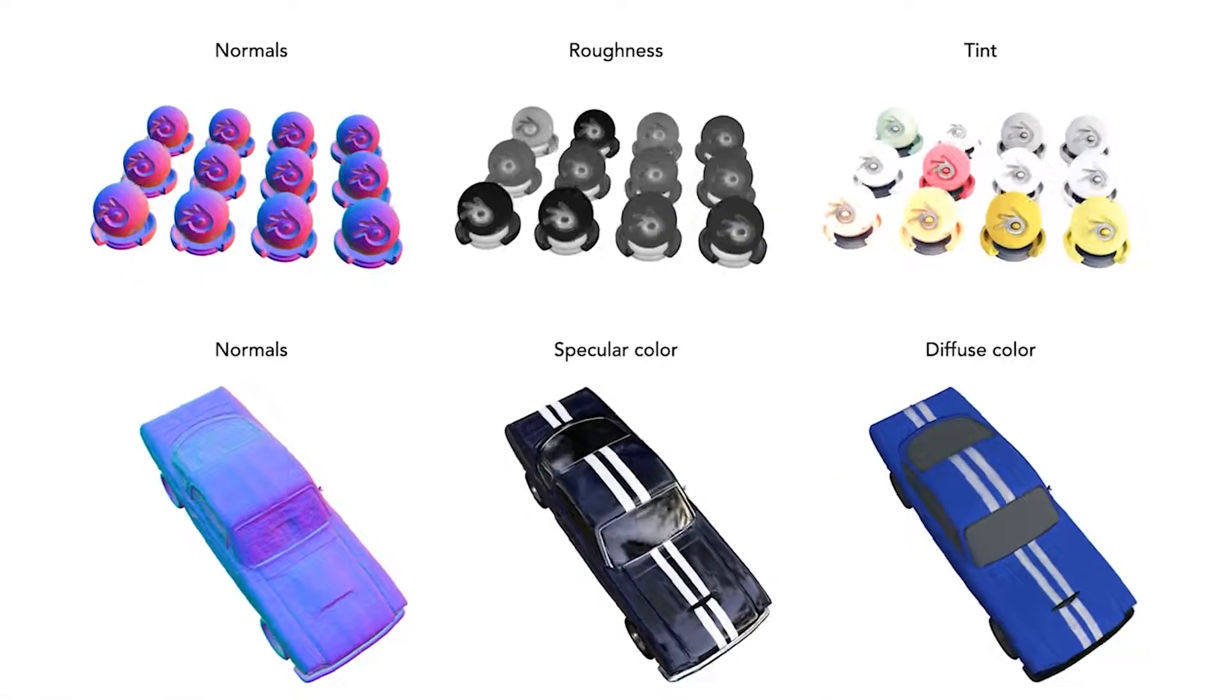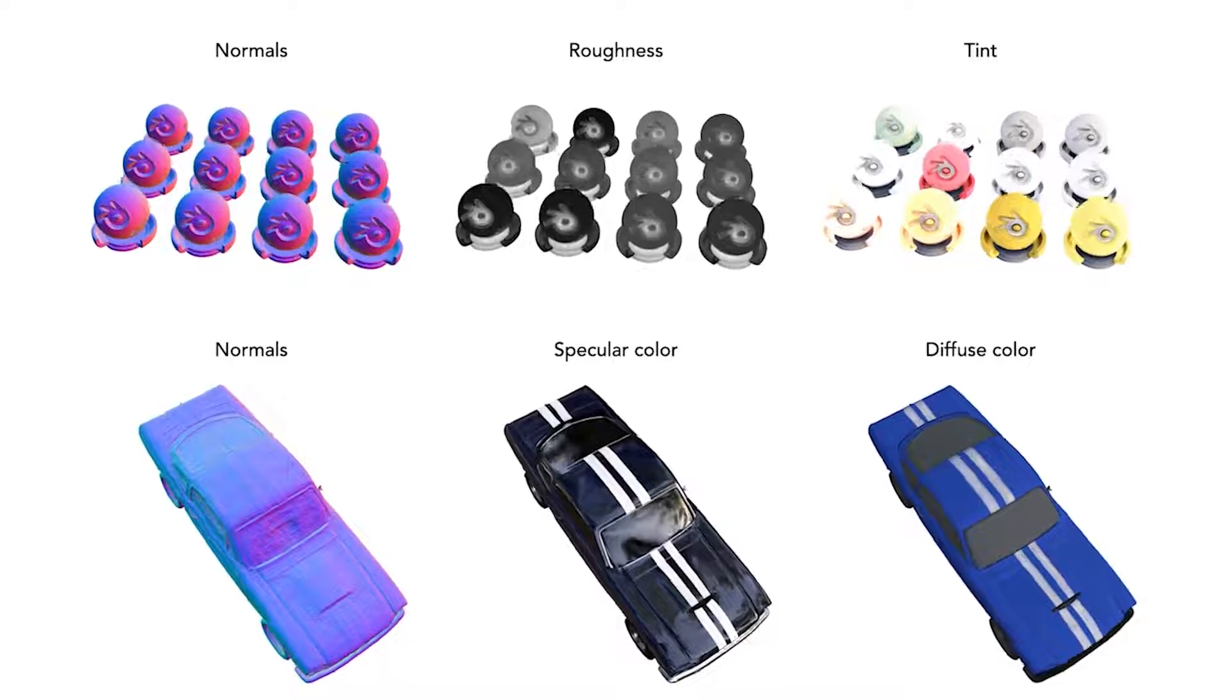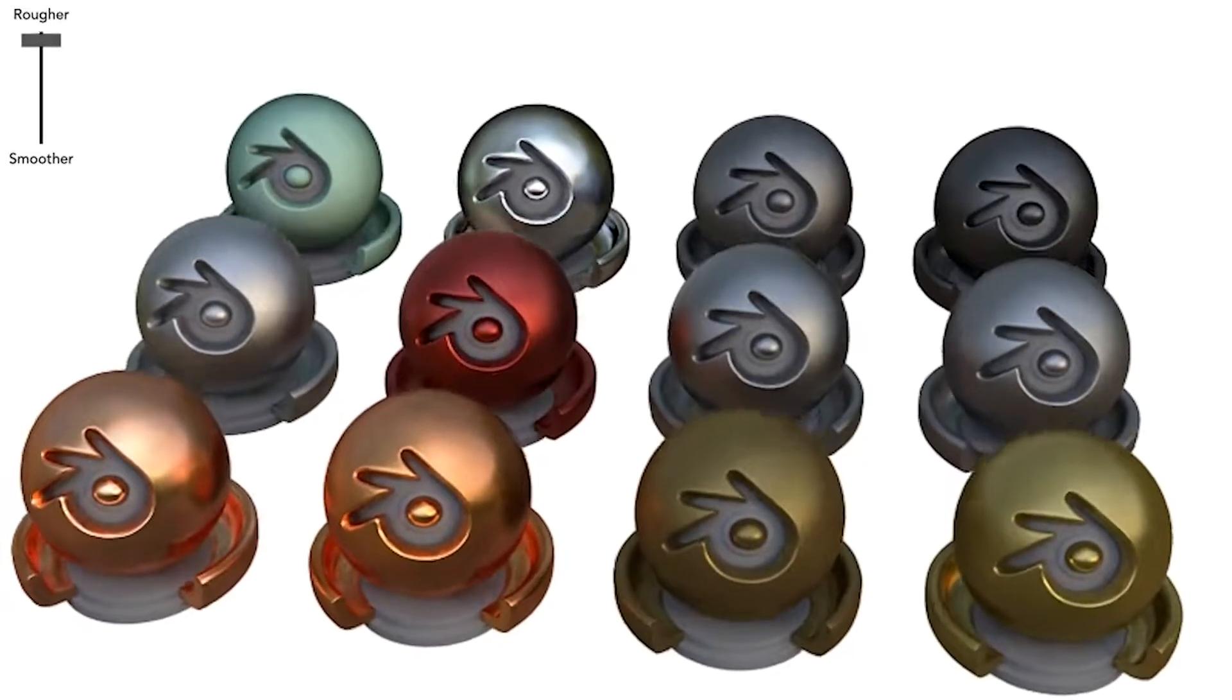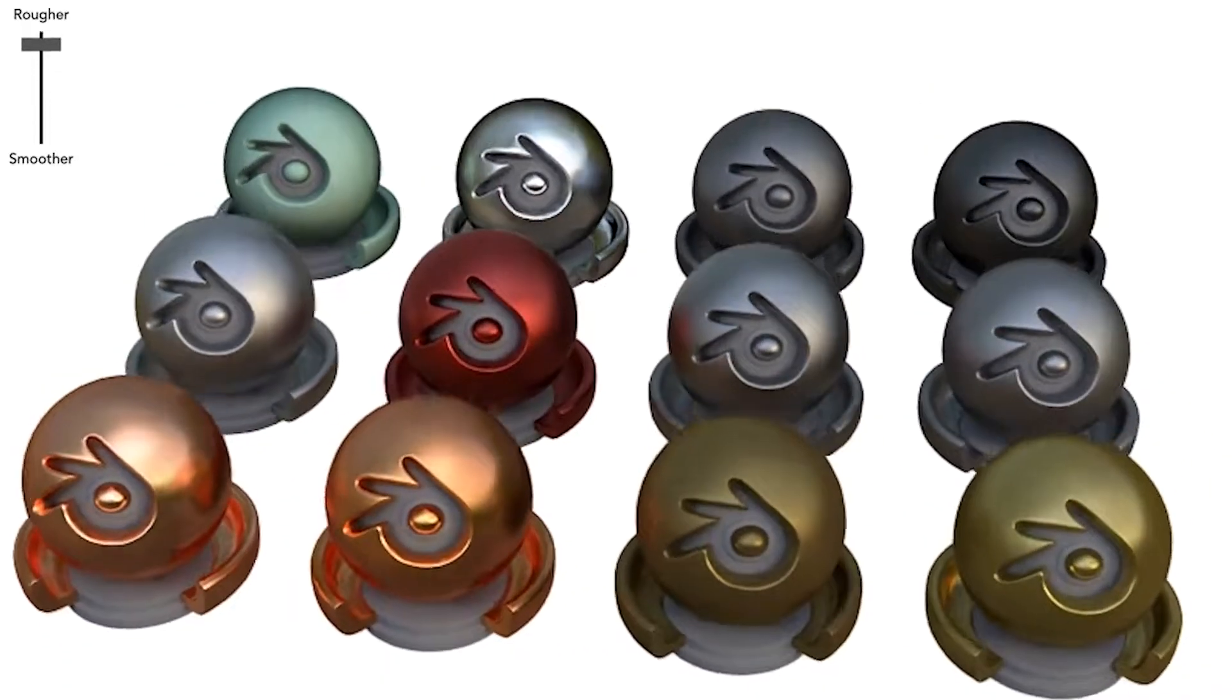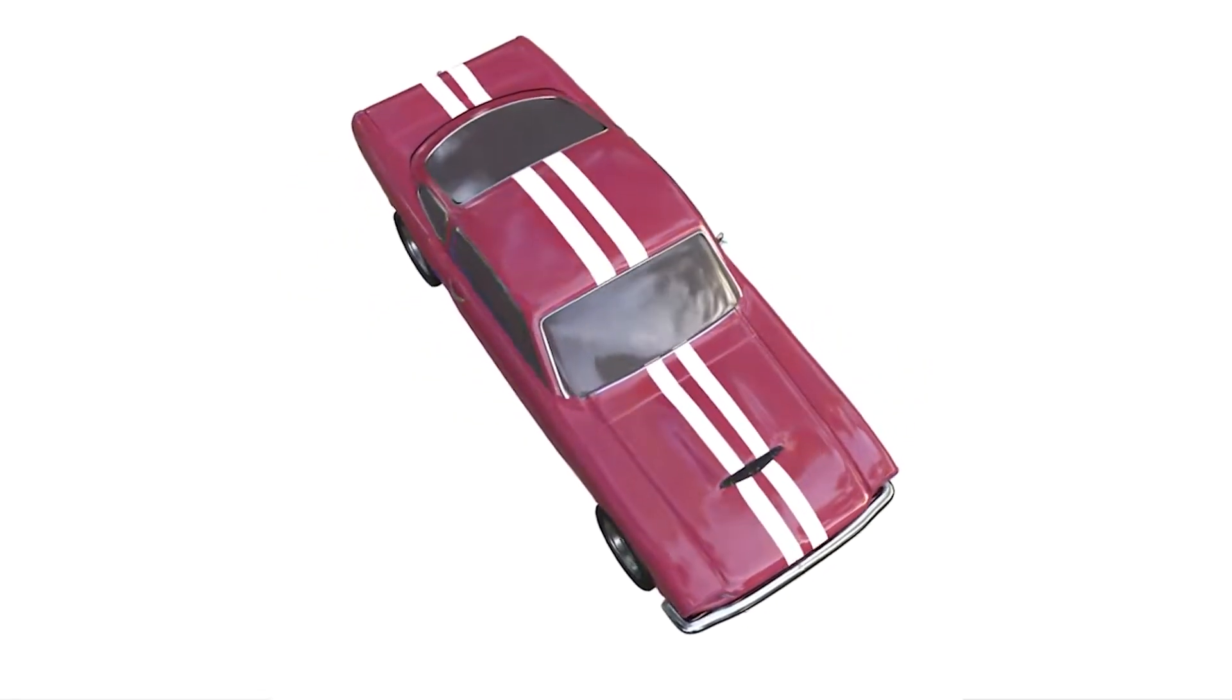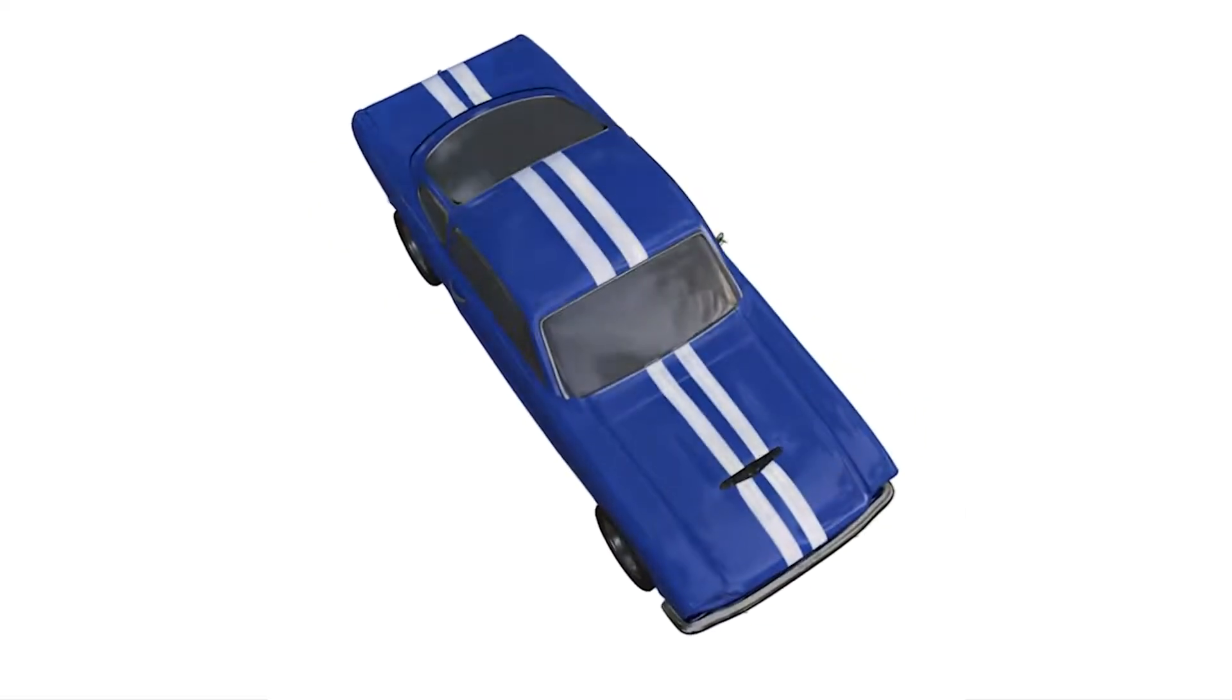Our method also structures outgoing radiance in a way that enables us to convincingly edit scene appearance after training. Here we increase the scene's roughness, resulting in a change in the perceived shininess of the objects. Here we modify the car's diffuse color without changing its specular color. We can also manipulate the amount of diffuse and specular color to alter the perceived material properties.